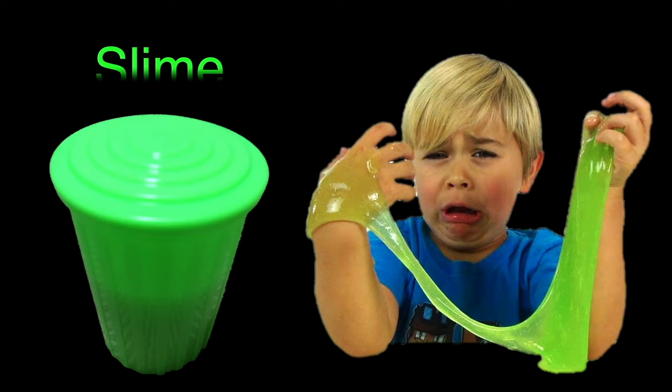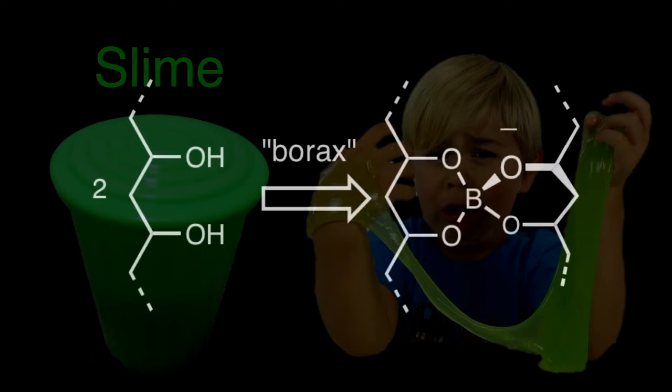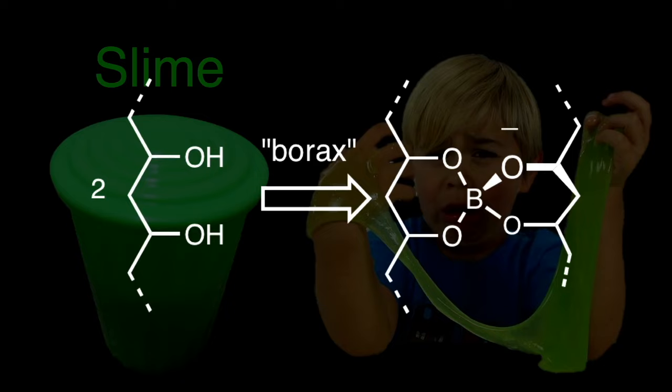Slime was a toy product manufactured by Mattel in 1976, sold in a plastic trash can. It consisted of a non-toxic viscous oozing green material made primarily from guar gum. The main components are polysaccharide guar gum and sodium tetraborate. You can make your own formula with a slight variation: use polyvinyl acetate or Elmer's glue, borax, and water mixed with a little bit of green food coloring to approximate the original slime formula.